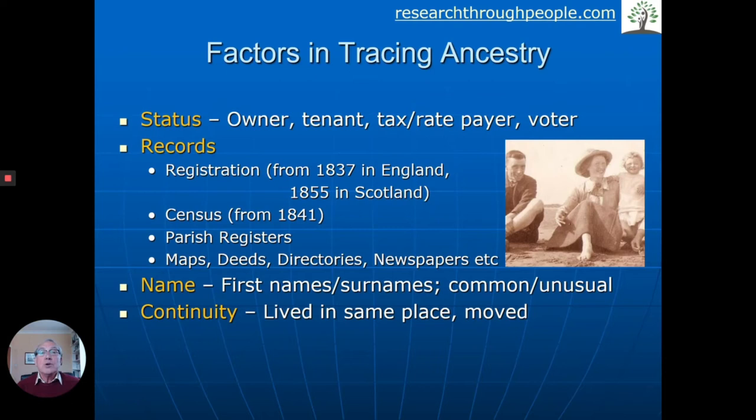The census shows where the person lives and may be particularly important. The parish registers were used before registration started. There are also various types of document that may be relevant: old maps may show us whether the house existed at a particular time, the deeds of the house can be very informative, there may be directories such as electoral rolls, and then there are newspapers, which may carry a story about the people who lived in the house.